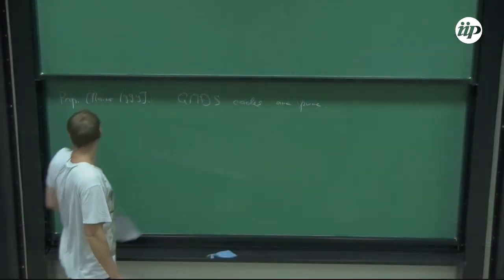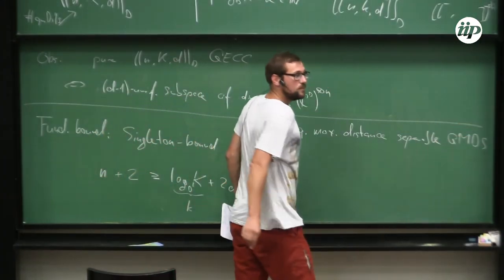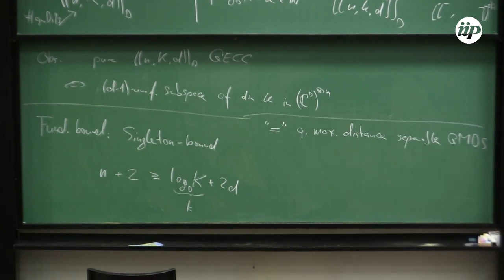There is a nice theorem by Rains, around 1999, which says that quantum MDS codes are pure. The proof derives this over rate generators and shows that certain terms have to cancel and vanish. An intuitive pedestrian proof is something I'm still trying to work out.